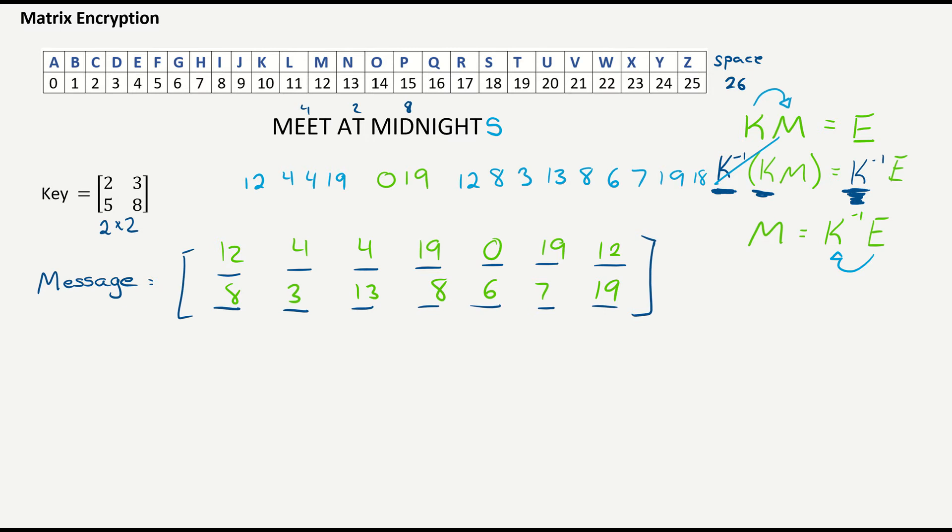Now that we have created our message matrix, we're now going to encode it. We'll call it our encrypted matrix. To encode it, we take the key that we have chosen, and we multiply it by our message matrix. And that's going to create another 2 by 7 matrix. And we will go through this matrix multiplication.